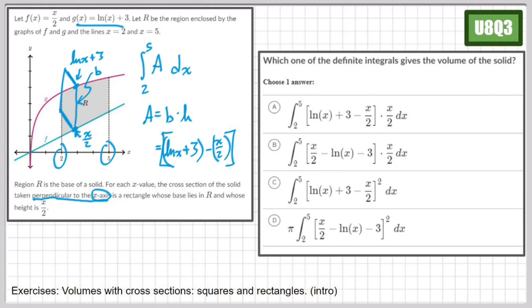All right. So now we have to get our h. What's our height? It's a rectangle whose base lies in r. That's the base. And we did that. And whose height is x over 2. Oh, there you go. x over 2. We don't have to do anything fancy for that one.